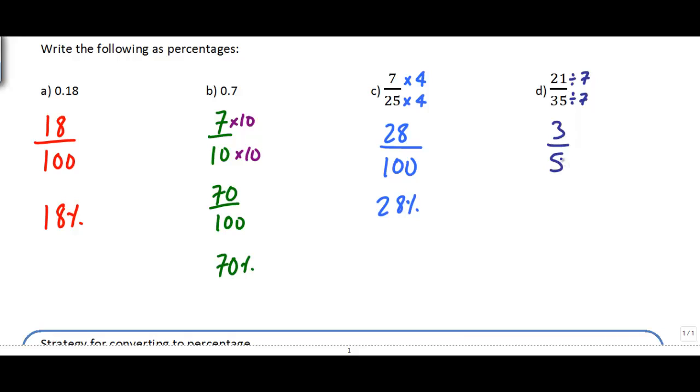35 divided by 7 is 5. I'm not done, but I can see that with a denominator of 5, that's pretty easy to convert into 100. I'd have to multiply it by 20. I'll multiply top and bottom by 20. 3 times 20 is 60, 5 times 20 is 100. So 60 out of 100 is 60%.